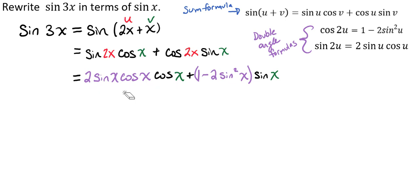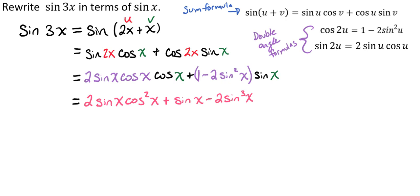We're going to distribute our sine of x as well, which is going to give us 2 times the sine of x times the cosine squared of x, plus the sine of x minus 2 times the sine cubed of x.